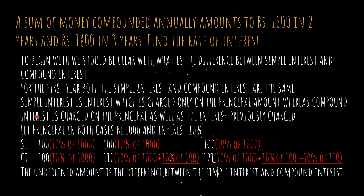Compound interest is the interest which is charged not only on the principal but also on the interest previously charged. So the interest will be calculated on the sum total of the principal plus the previously charged interest.